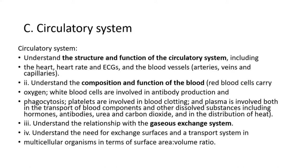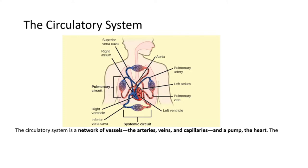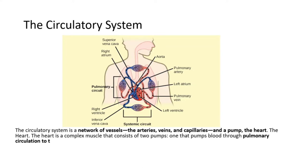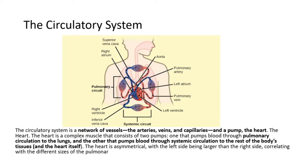Now let us move on to the circulatory system. The circulatory system is a network of vessels — the arteries, veins, and capillaries — and a pump, the heart. The heart is a complex muscle that consists of two pumps: one that pumps blood through pulmonary circulation to the lungs, and the other that pumps blood through systemic circulation to the rest of the body's tissues and the heart itself. The heart is asymmetrical, with the left side being larger than the right side, correlating with the different sizes of the pulmonary and systemic circuits.